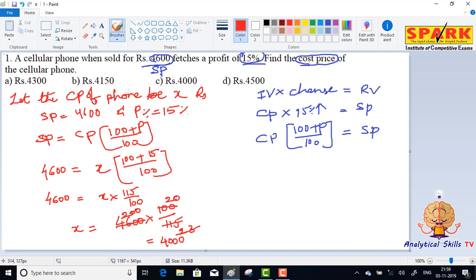Of the article. So what is the answer here? Option C is the answer. Now, competitive approach: cost price into percentage increase equals selling price. Cost price we need to find, percentage increase is 15%, so 115 by 100 equals selling price 4600. Same simplification: 20, 23, 200 times cancelled. So cost price is 4000.